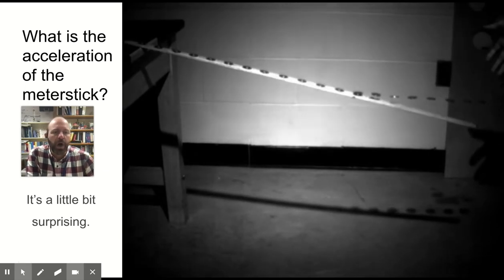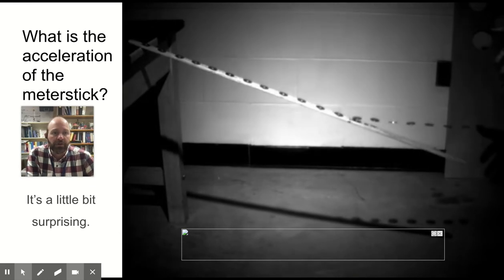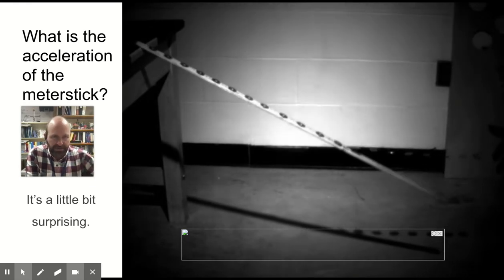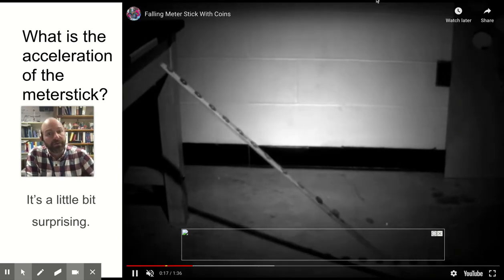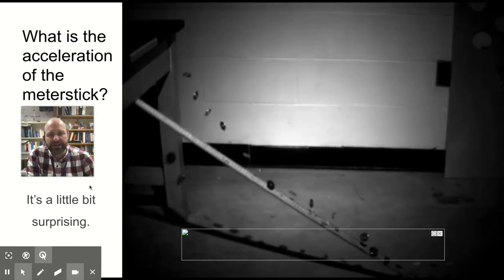And you can see that as it falls, the washers, which can just free fall, are basically falling straight down. But the meter stick is falling out from under them, which is kind of an interesting thing.